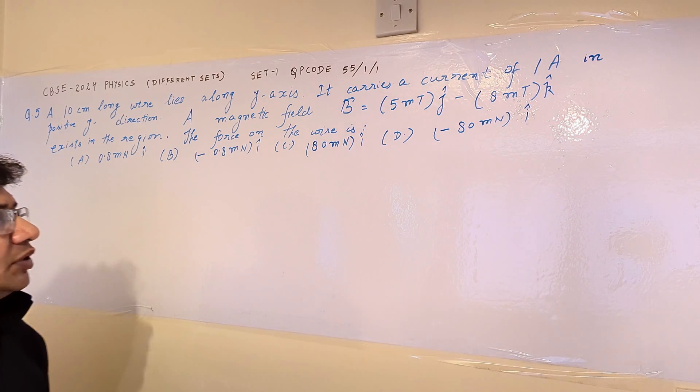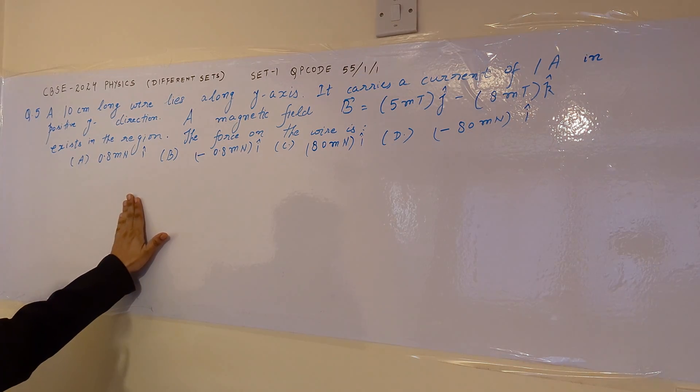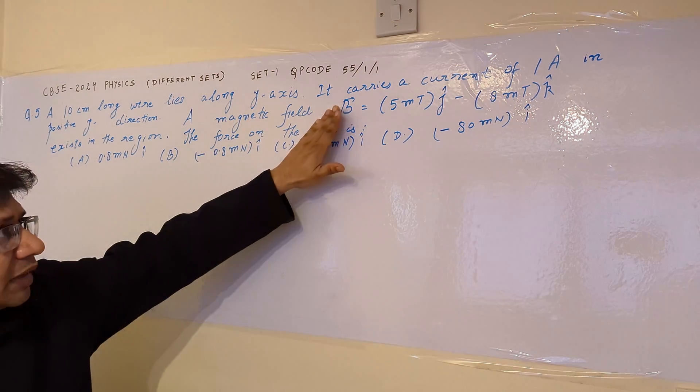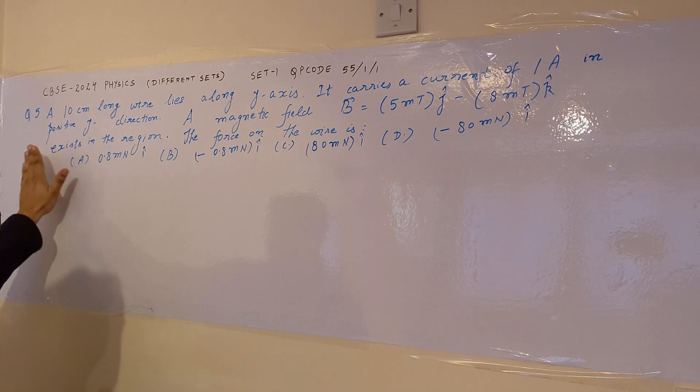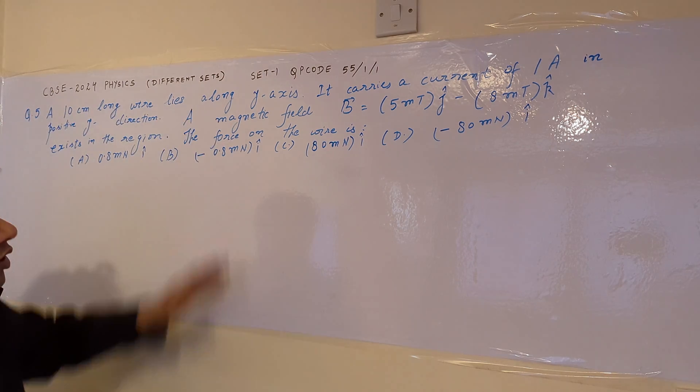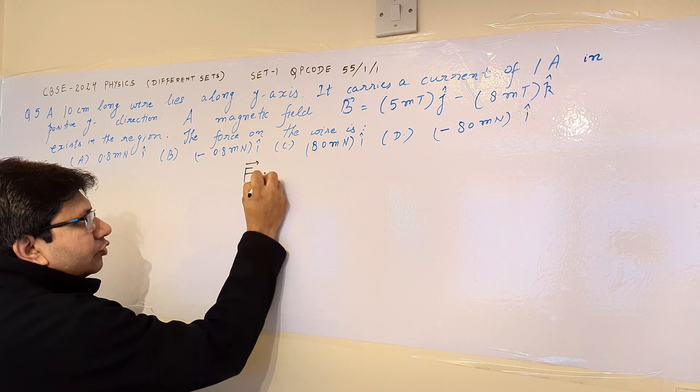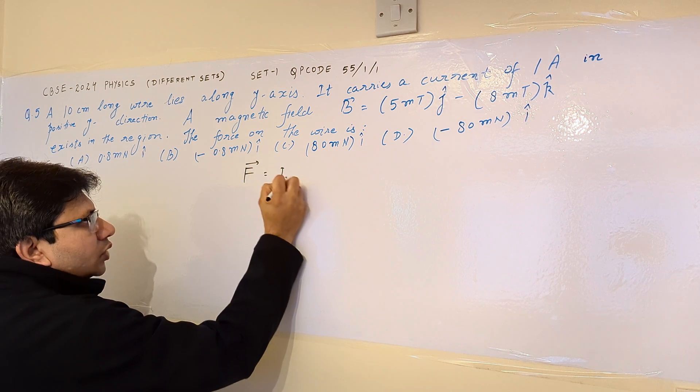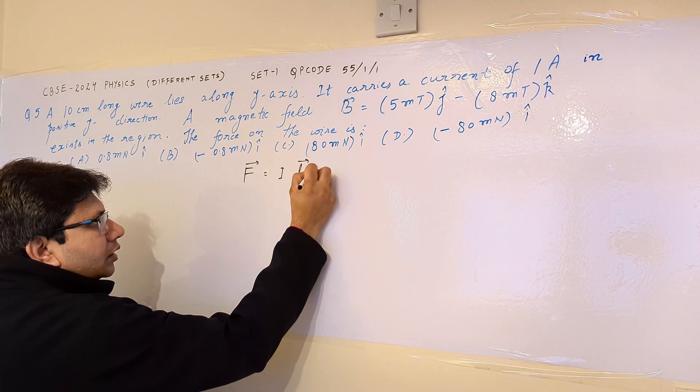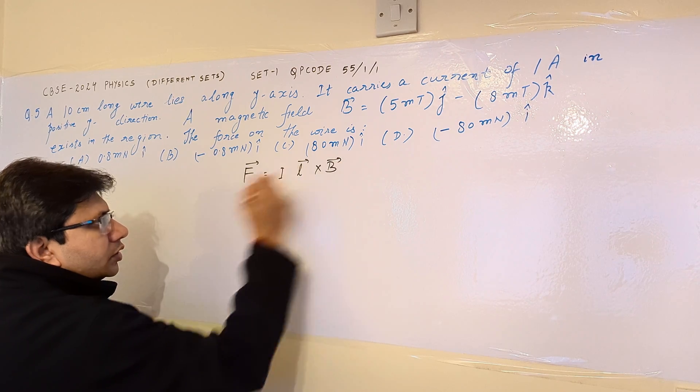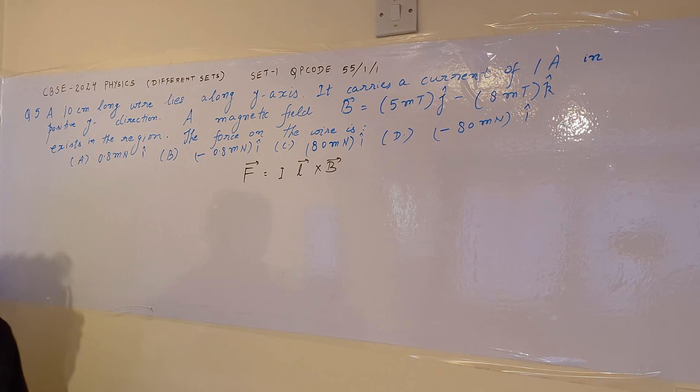So the problem is based on the concept of finding out the force when magnetic field is given and the length vector is given. The formula for force which we have to use is the very familiar formula F equals I L cross B. We have to use this particular formula.